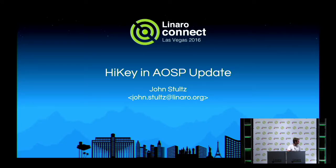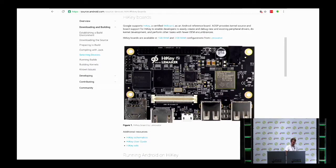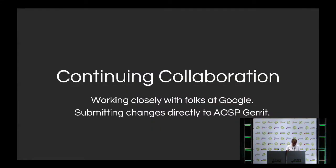I'm John, and I'll talk about work on HiKey and AOSP over the last six months. In case you missed it at the last Connect, HiKey is officially supported in AOSP — everything you need to build Android images can be found in AOSP and obtained straight from Google. We've been continuing this collaboration working closely with folks at Google while submitting all changes through the public AOSP Gerrit. A whole bunch of features have been added: we updated it to Nougat basically the week it was released, moved to the 4.4 stable base kernel, and we've been staying current with the dash-stable branch.